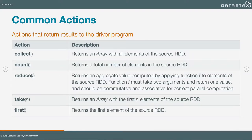I'm going to show you just a few common actions so you get a taste of what the API is like, and then we'll look at some examples. Collect, which you've seen already, returns an array with all of the elements of the source RDD. Count simply counts the total number of elements of the source RDD.